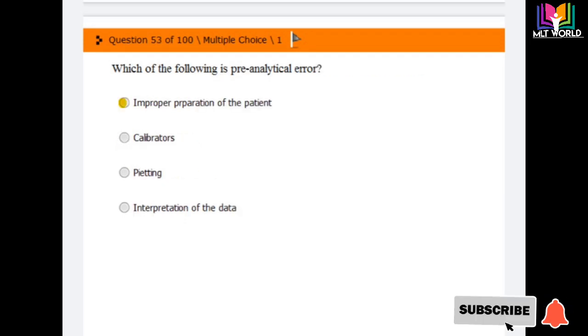Question number 53: Which of the following is a preanalytical error in quality assurance? These stages are preanalytical, analytical, postanalytical. Options are improper preparation of the patient, calibration, pipetting, and interpretation of data. The correct answer is improper preparation of the patient. That is a preanalytical error. Calibration and pipetting are analytical errors, and interpretation of data comes in postanalytical errors.